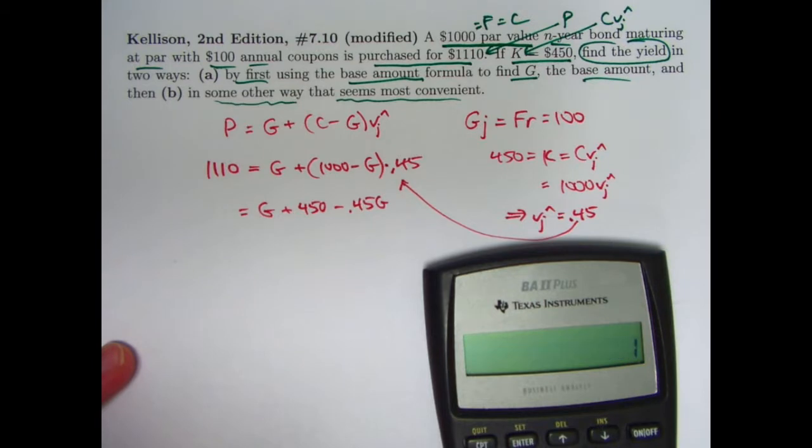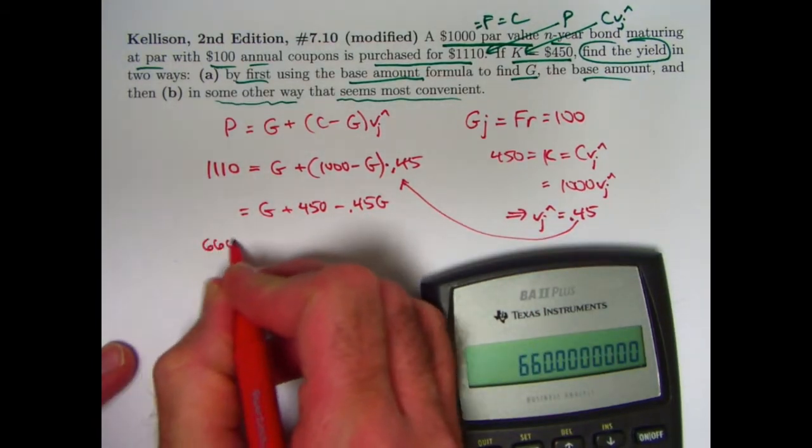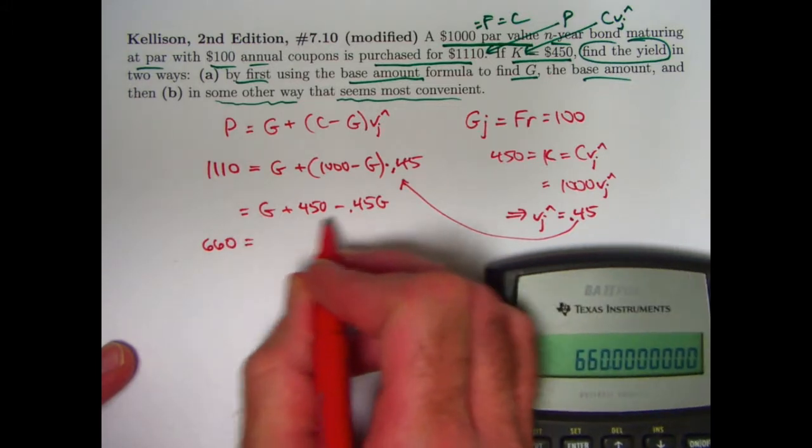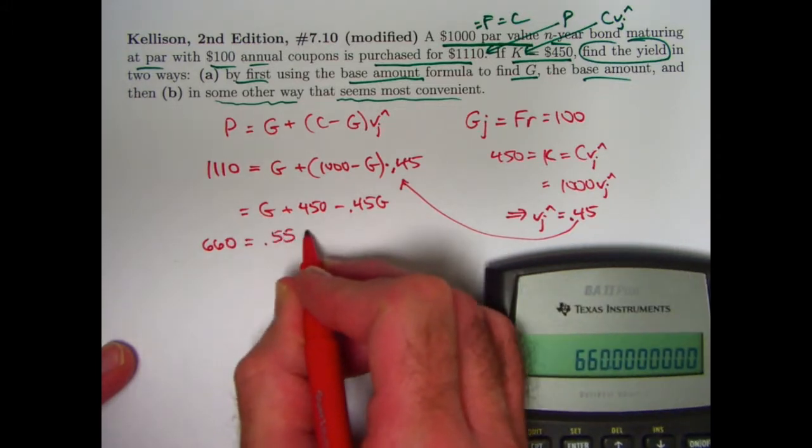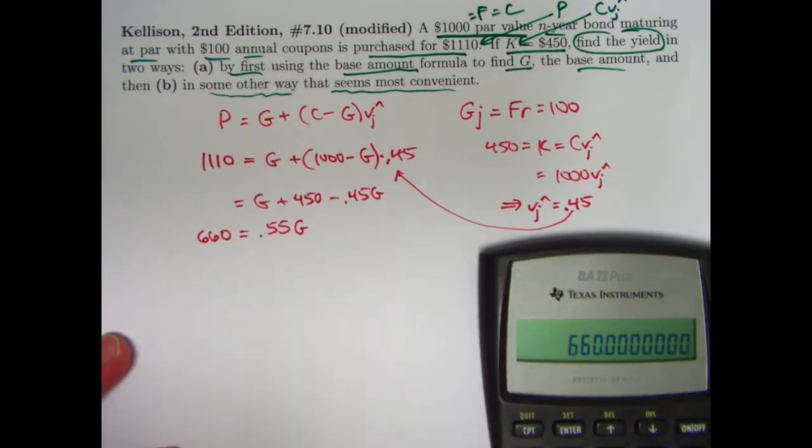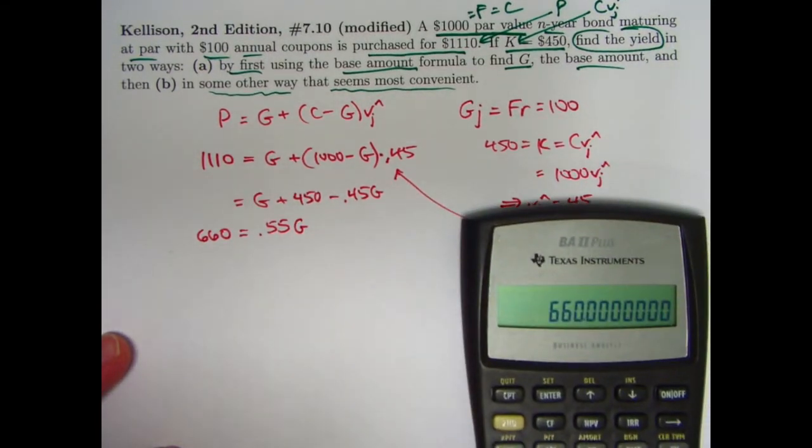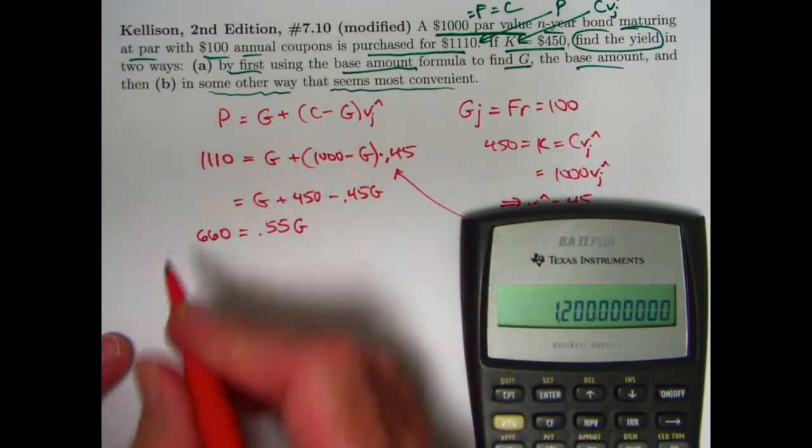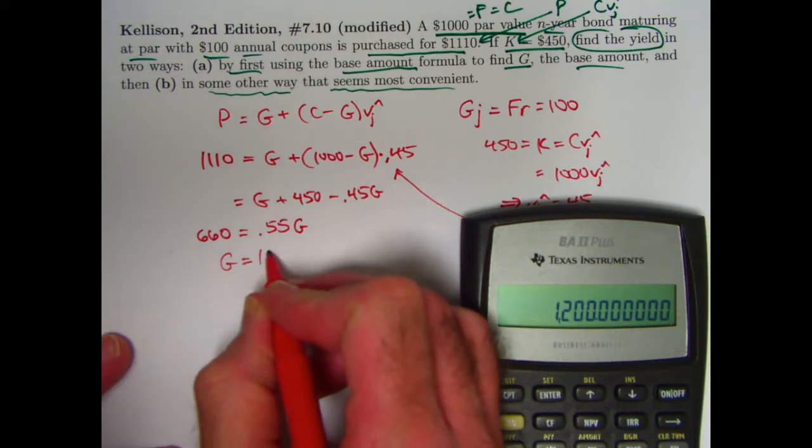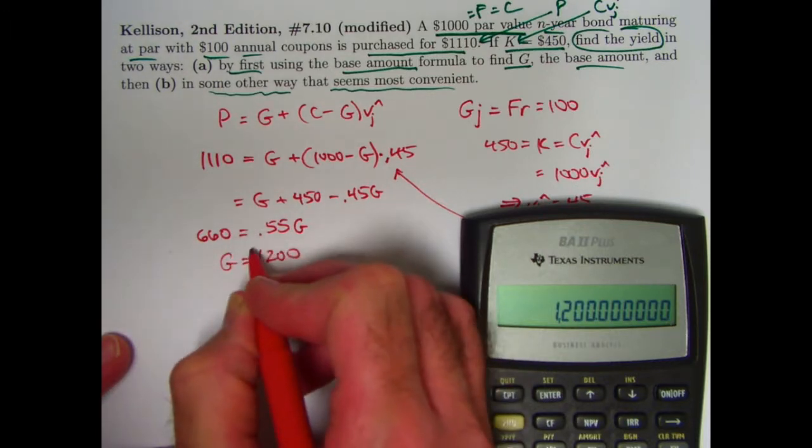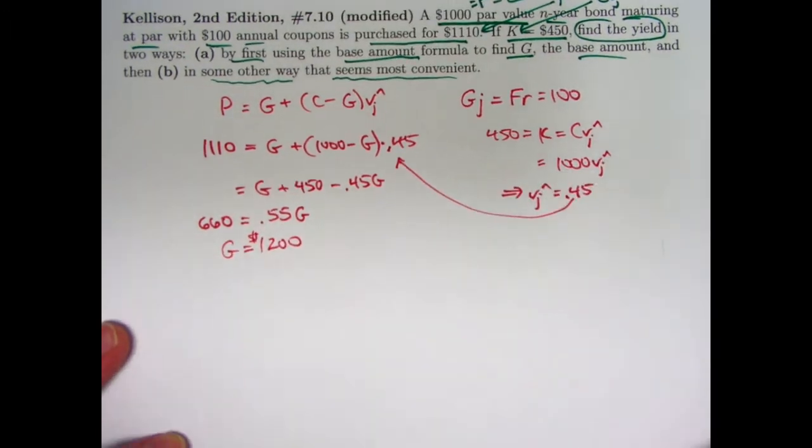So I don't make a mistake, let's use the calculator. We get 660 equals 0.55 times capital G. Divide everything by 0.55. Looks like capital G is 1,200. Technically speaking, that's in dollars, but don't worry about it.